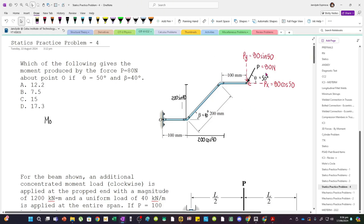Now we know all the components and distances, so we can calculate the moment. Let's first look at Py. The force is 80 sine 50, and the moment arm is 100 plus 200 cos 40 plus another 100.